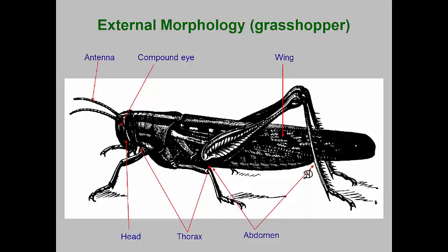The grasshopper has been used for decades as the typical insect for morphological studies, so we'll use the grasshopper too. In this illustration we can see the three tagmata: the head, thorax, and abdomen, as well as some of the major appendages or structures. We can see the antennae, compound eyes, three pairs of legs, and the wings.